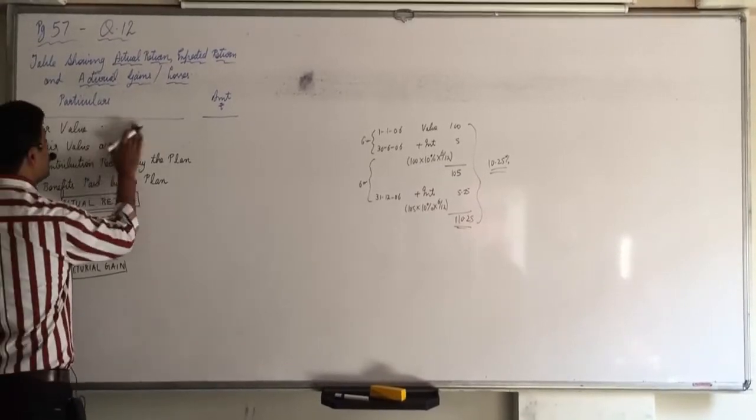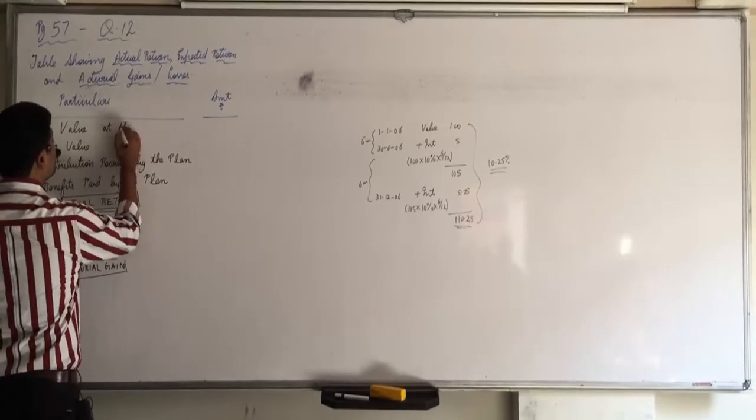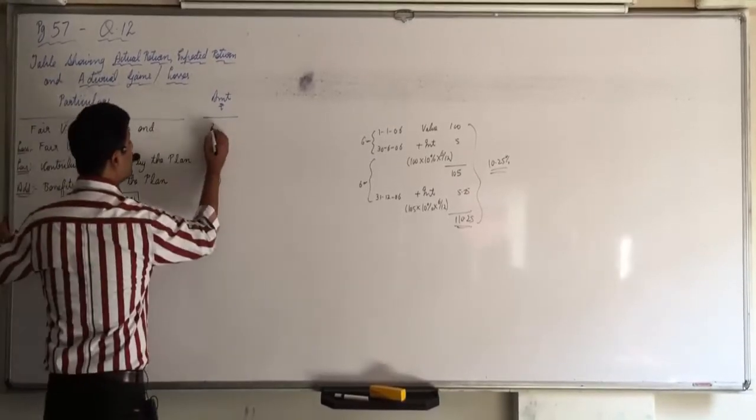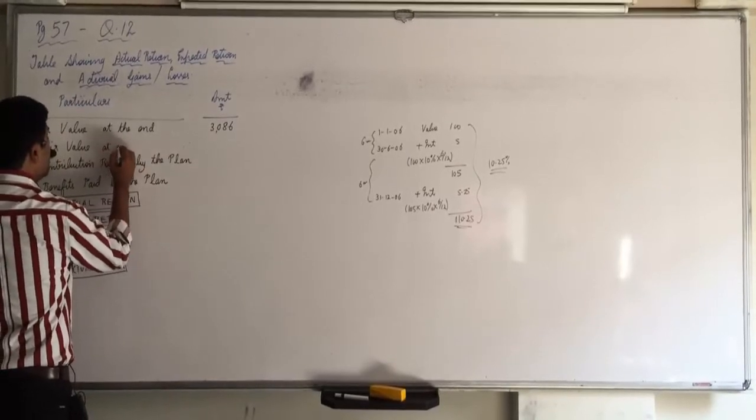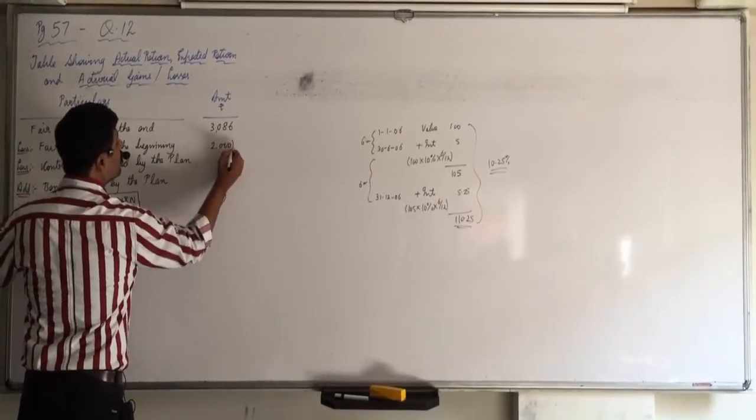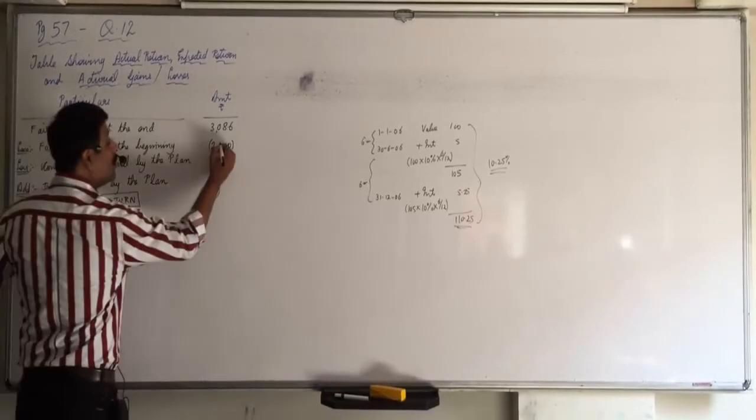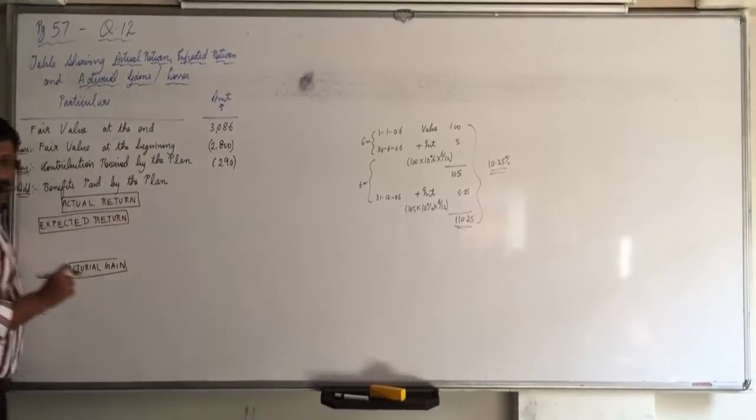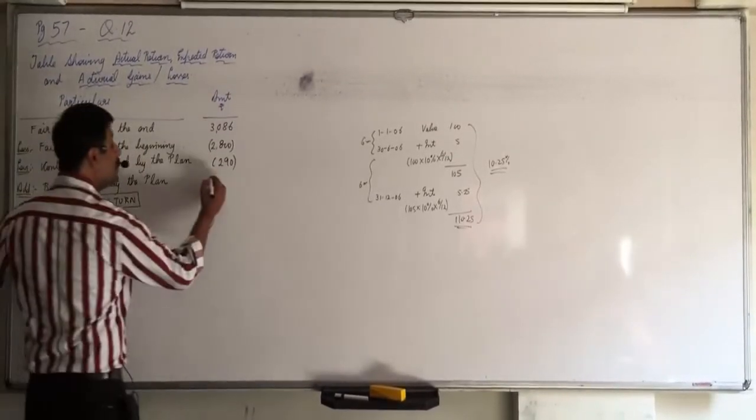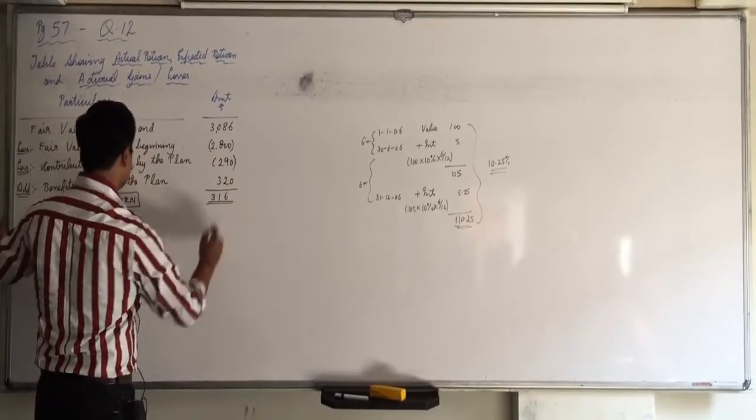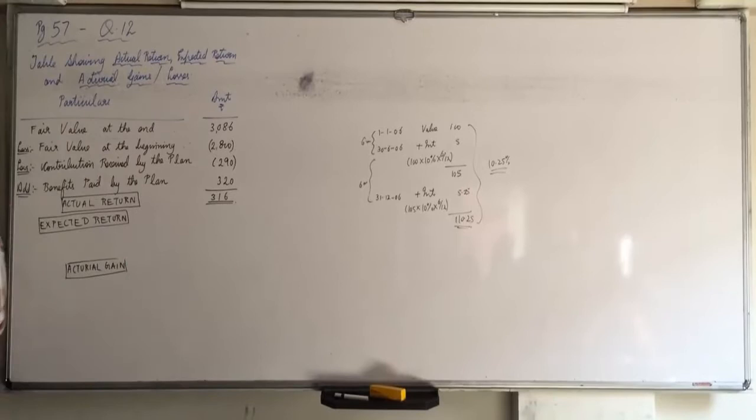Fair value at the end is how much? 3086. Minus fair value at the beginning is 2800. Then contribution received by the plan is 204 and benefit paid by the plan is 578. So 3086 minus 2800 minus 204 plus 578 equals 660. This is the actual return. Up till here only you have to find.